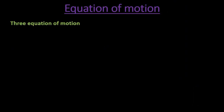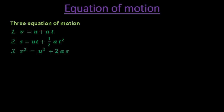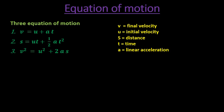Now let us discuss the equations of motion. We have already studied in the chapter on motion that there are three equations of motion. The first equation is v = u + at. The second equation is s = ut + ½at². The third equation is v² = u² + 2as. Here, v is the final velocity, u is the initial velocity, s is the distance traveled, t is the time taken, and a is the linear acceleration. These same equations are valid when a body falls freely under the influence of gravitational force.